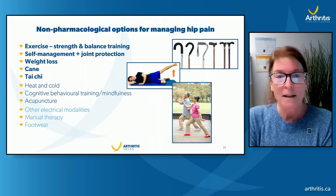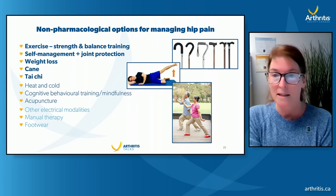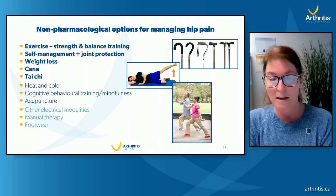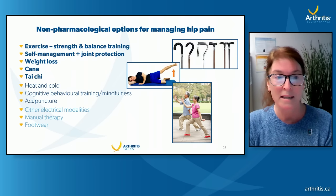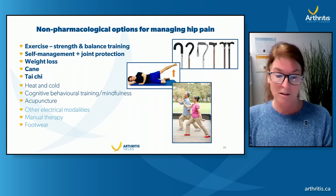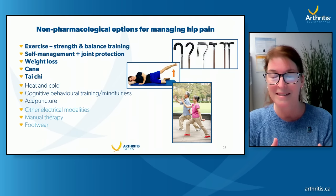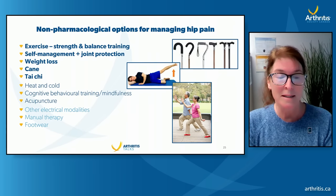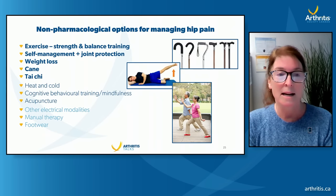Exercise with a focus on strength training is important to maintain strong muscles around the hip, which also helps with balance. Early in hip OA diagnosis, there can already be a change in balance and an increased risk of falling. We work on not just slow movements but also fast strengthening exercises — when you trip or stumble, you need to be able to contract that muscle quickly to catch yourself before you fall.